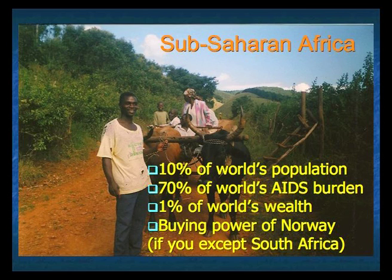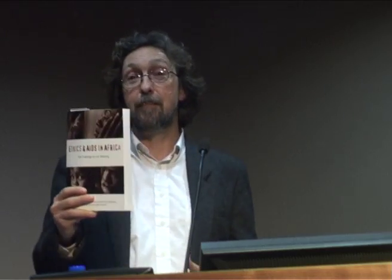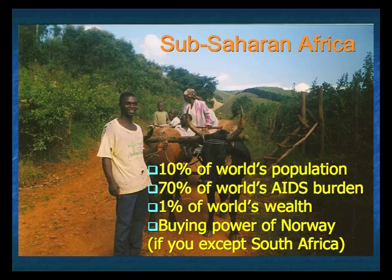In particular, I'll be looking at Eastern and Southern Africa, where AIDS is having the greatest impact. Apart from South Africa, the rest of Sub-Saharan Africa is estimated to have the buying power of a country equivalent to Norway — that's 1% of the world's wealth, 10% of the world's population, but 70% of the burden of HIV AIDS.